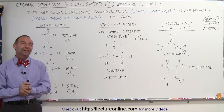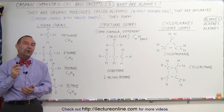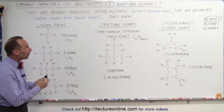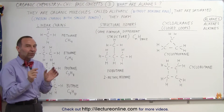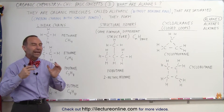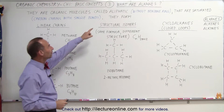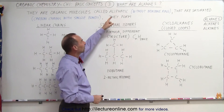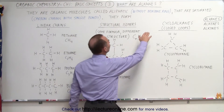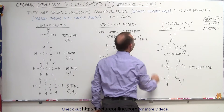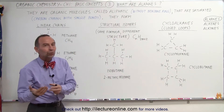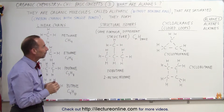Welcome to ilectureonline. We're now going to answer the question: what are alkanes? Remember that there were two main groups of organic molecules — one called the aliphatics, the ones that do not have a benzene ring, and the aromatics, the ones that do contain the benzene ring.